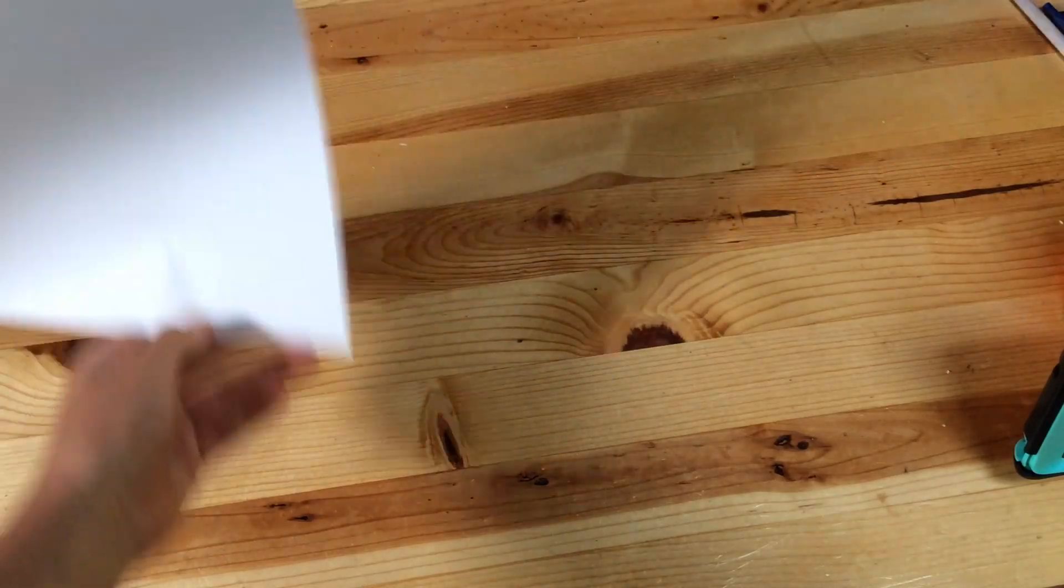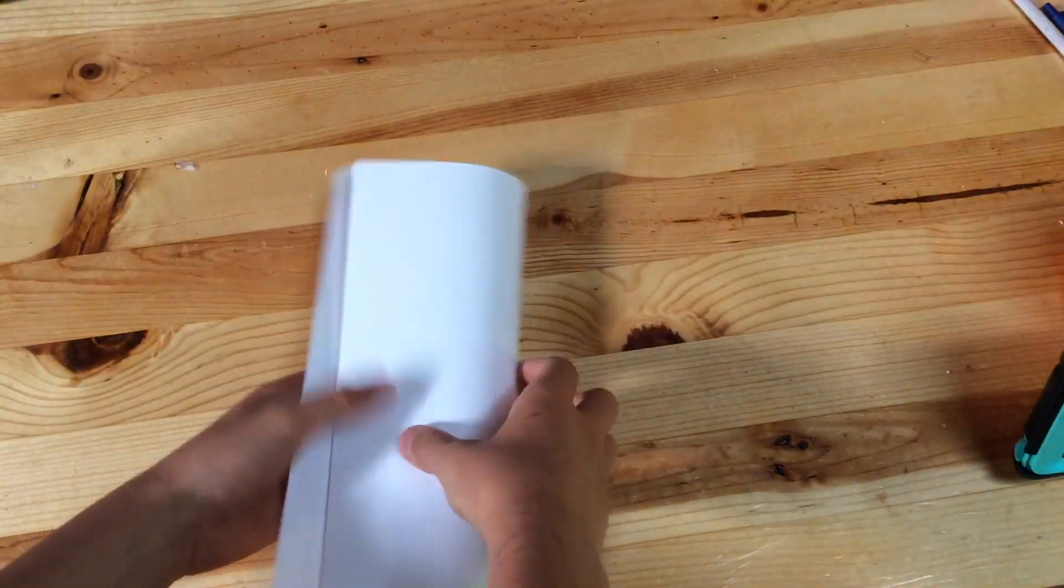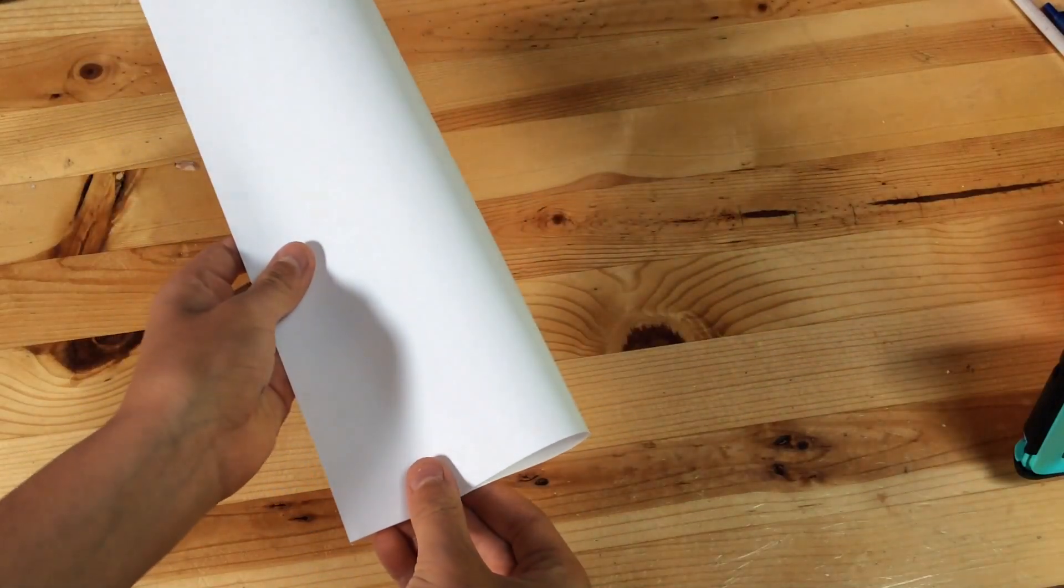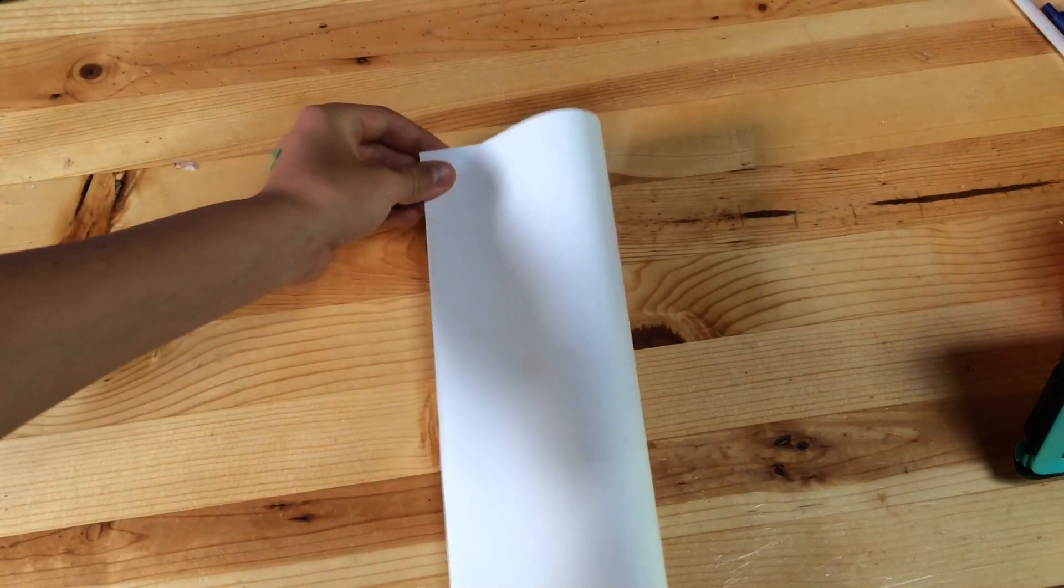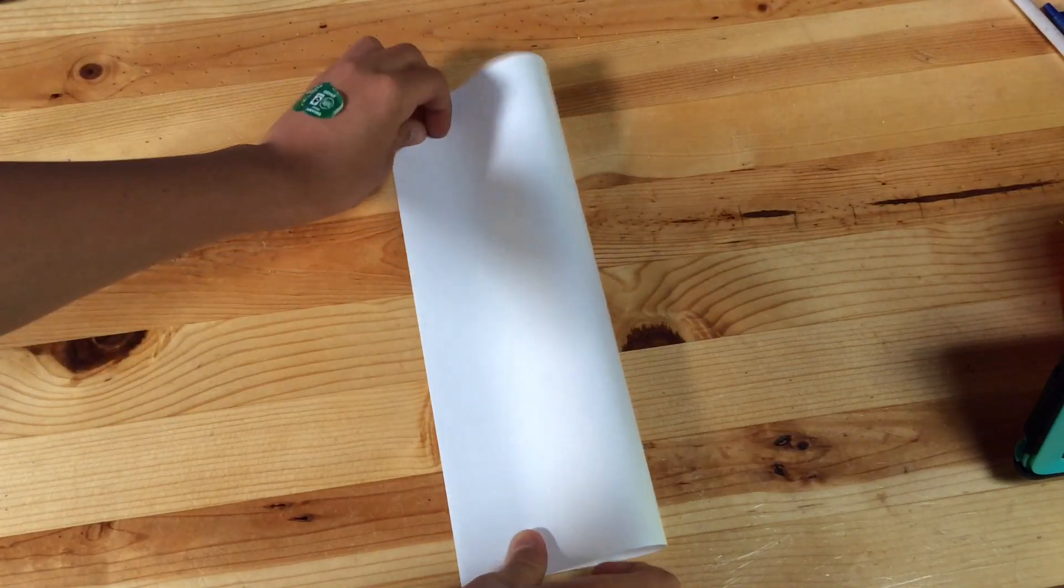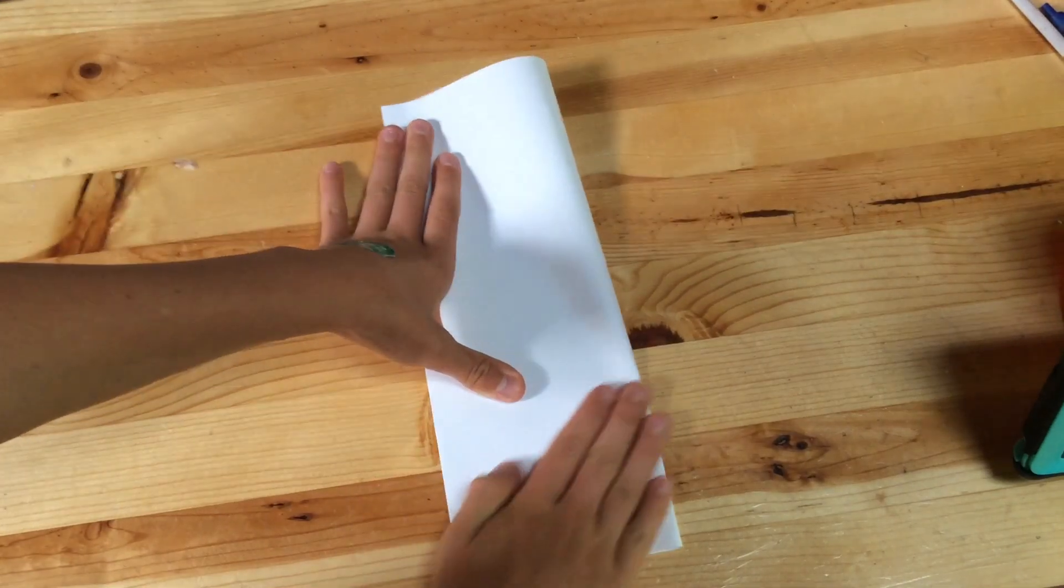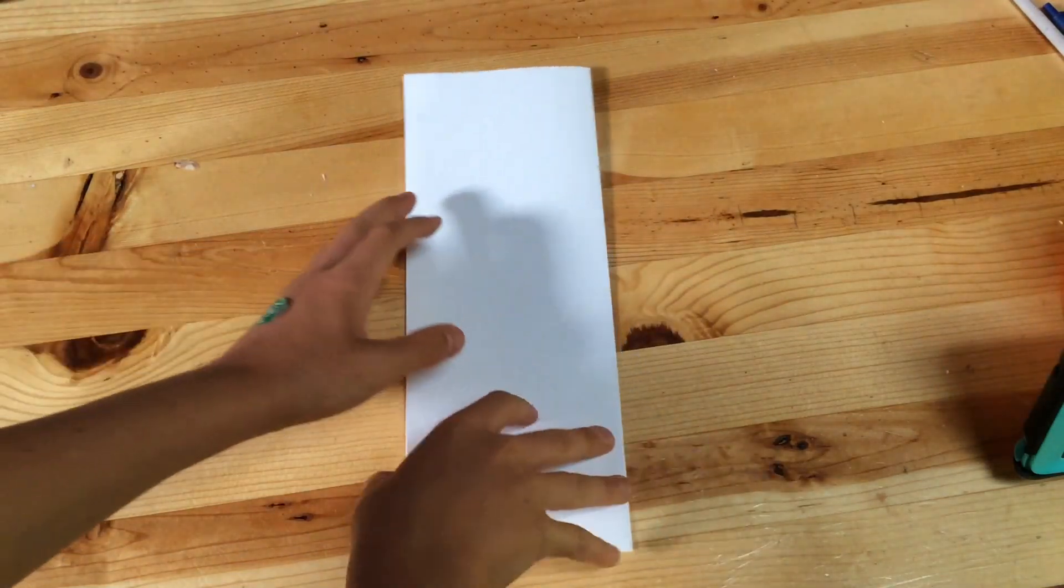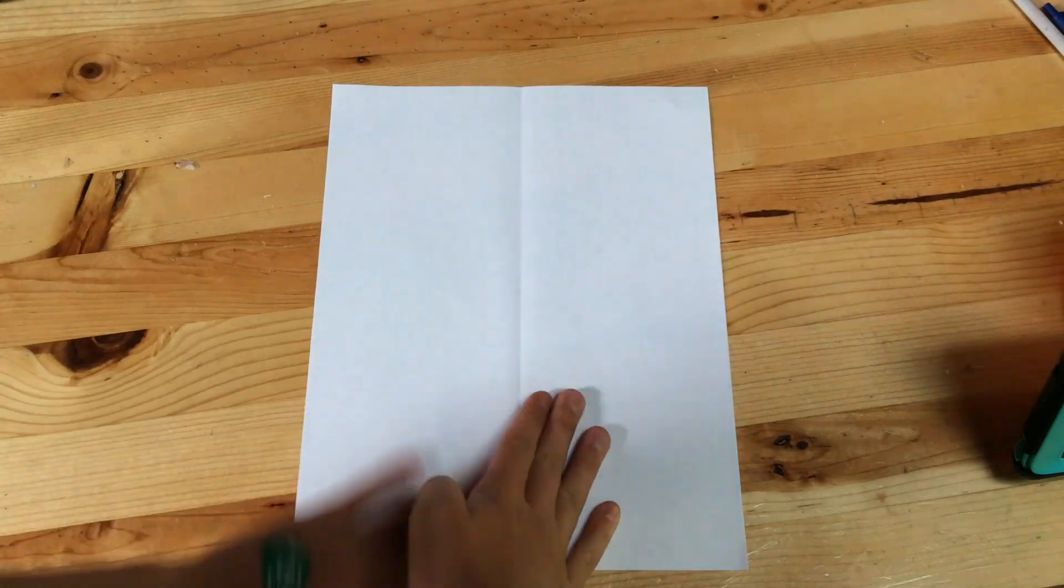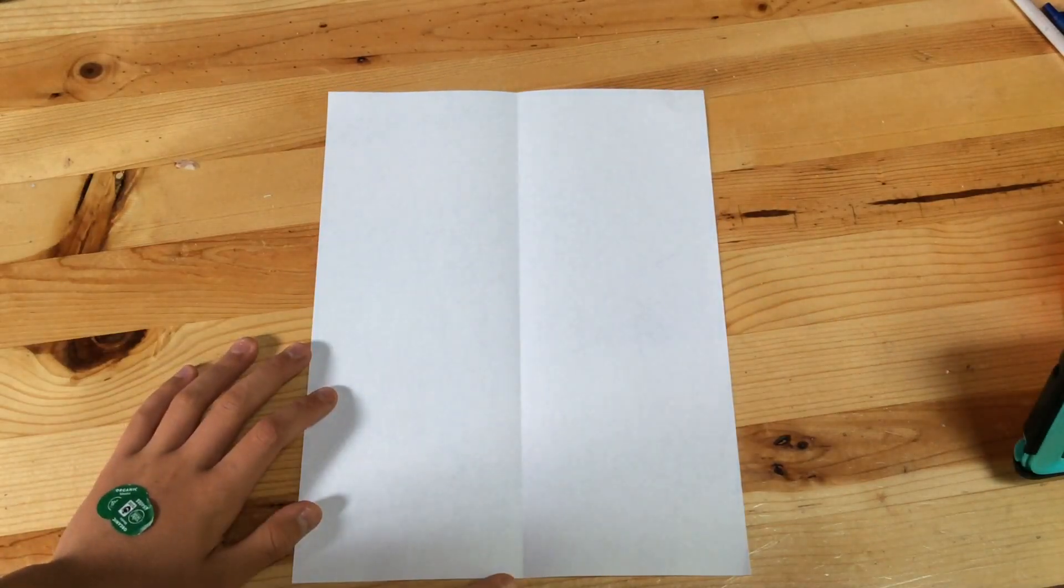So you start off with an original piece of paper, not squares. You fold it in the middle for the guidelines, just like this. And then you open it back up. Make sure you can see the crease along the middle.